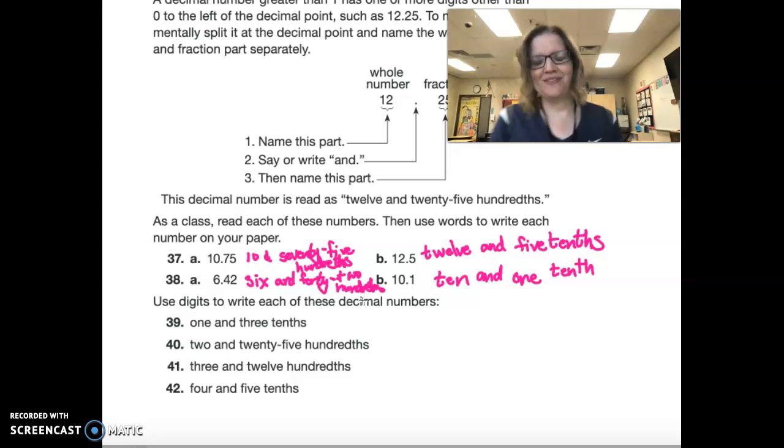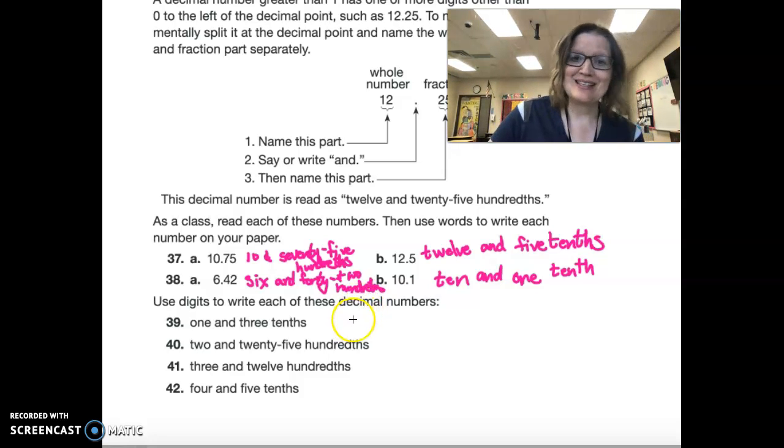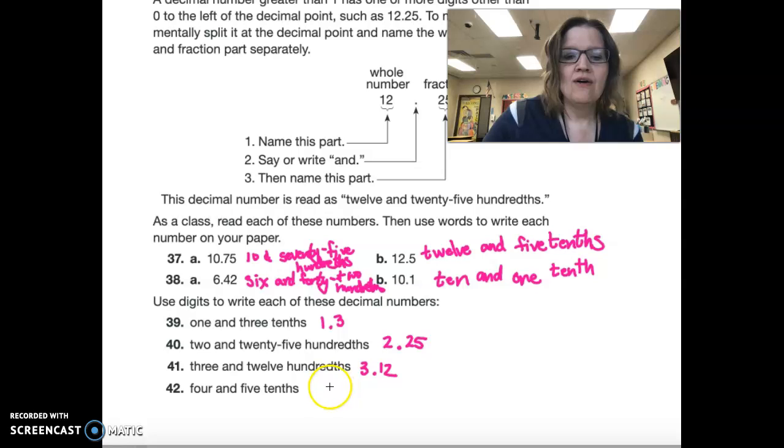Now, use digits to write each of these decimal numbers. Okay, this is something we can do. One and three tenths. So, I say one and three tenths. My whole number. And twenty-five hundredths. Three and twelve hundredths. Four and five tenths.